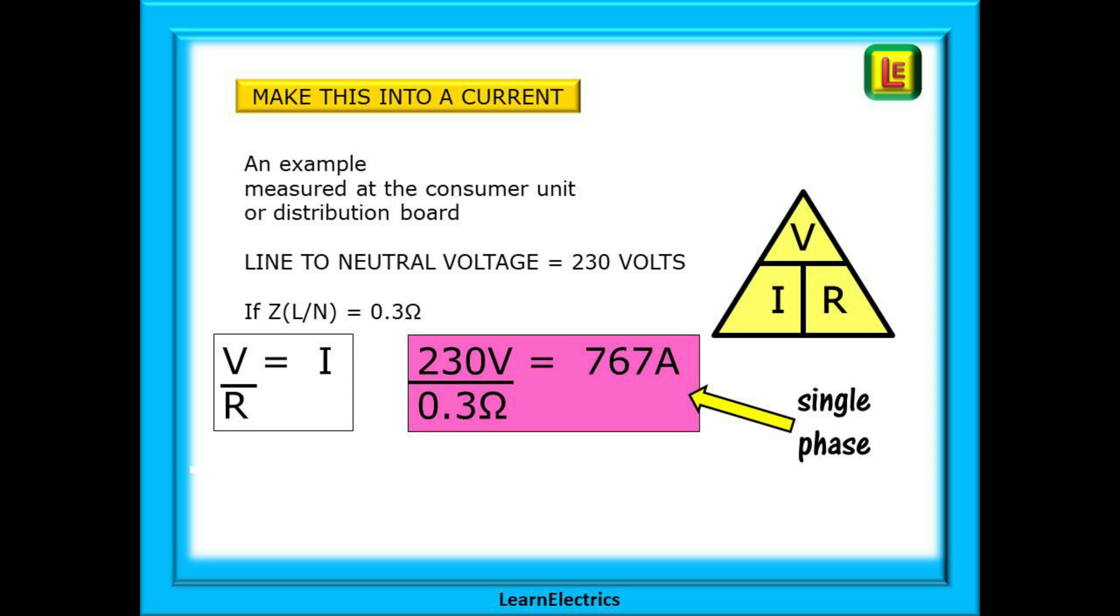Now let's make this into a current. We can measure the prospective short circuit current at the distribution board. The line to neutral voltage is 230 volts and let's say that the loop resistance is 0.3 ohms. Using ohms law, voltage divided by resistance will give us current. So 230 volts divided by 0.3 ohms comes to 767 amps or thereabouts. This would be a single phase fault current, the PSCC.